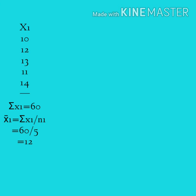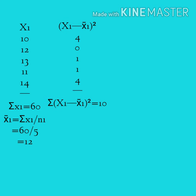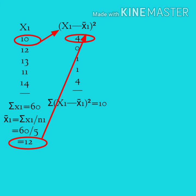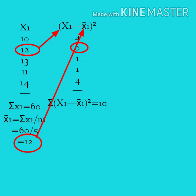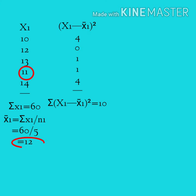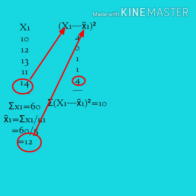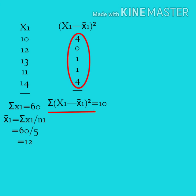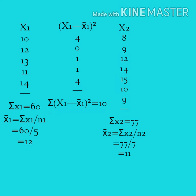Now calculate (x₁ − x̄₁)² for each Drug A value: (10−12)² = 4, (12−12)² = 0, (13−12)² = 1, (11−12)² = 1, (14−12)² = 4. Adding all values gives Σ(x₁ − x̄₁)² = 10.